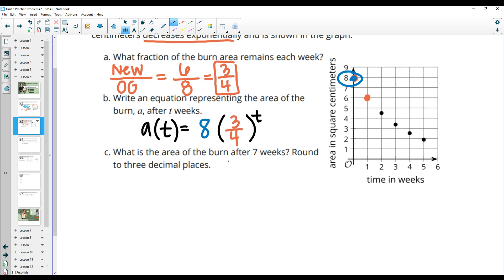What is the area of the burn after seven weeks? So now we'll do a of seven into our equation. So we'll do eight times three-fourths to the seventh power. And we'll type that into our calculator. And you get about 1.068. And then this is in square centimeters. So 1.068 remaining.